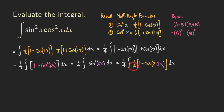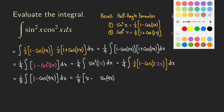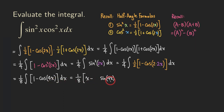Cleaning up, we have one-eighth times the integral of (1 minus cosine 4x) dx. Now we can integrate directly: the antiderivative of 1 is x, and the antiderivative of cosine 4x is sine(4x) times one-fourth (the reciprocal of the coefficient 4). So we get one-eighth times (x minus one-fourth sine of 4x), plus C.